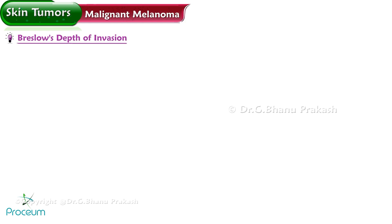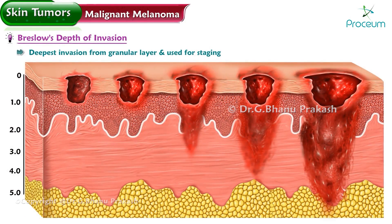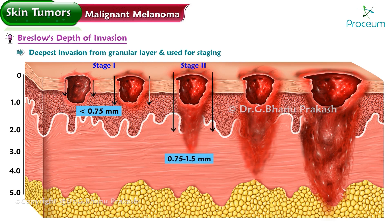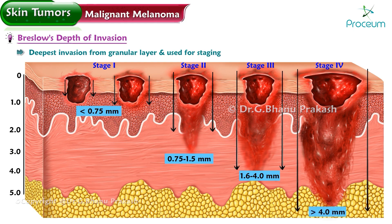Breslow's depth of invasion measures the deepest invasion from the granular layer and is used for staging. Stage 1: less than 0.75 mm. Stage 2: 0.75 to 1.5 mm. Stage 3: 1.6 to 4 mm. Stage 4: greater than 4 mm.